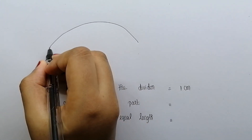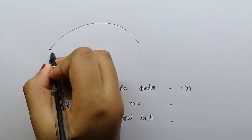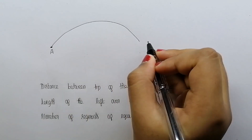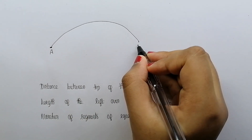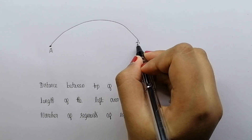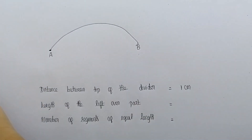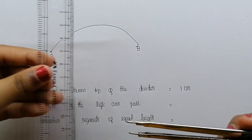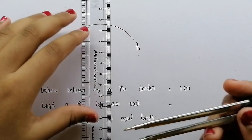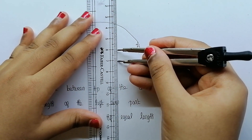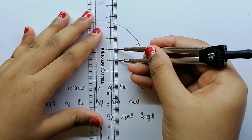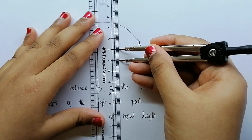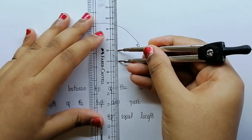The beginning of the curved line is marked as A and the end is marked as B. Now take a divider and separate its two tips by a small distance — for example, one centimeter — with the help of a ruler.